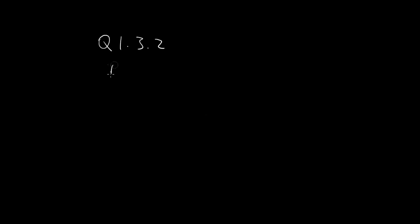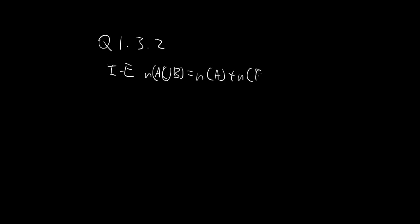For this problem, we'll simply apply the inclusion-exclusion formula, which says the number of elements in A union B is equal to the number of elements in A plus the number of elements in B minus the number of elements in A intersect B.